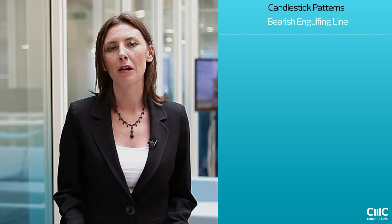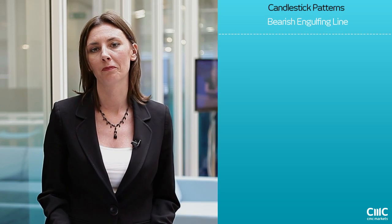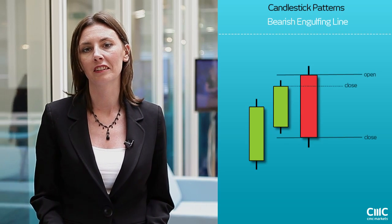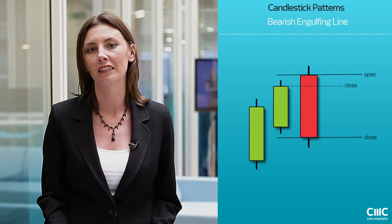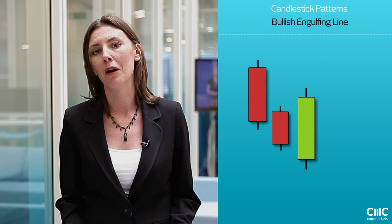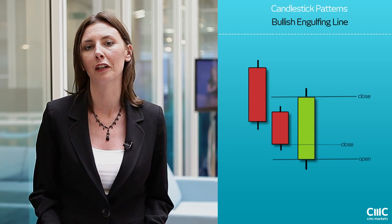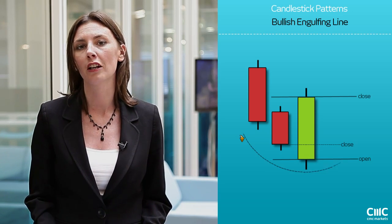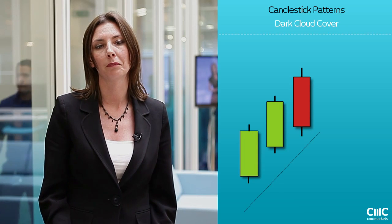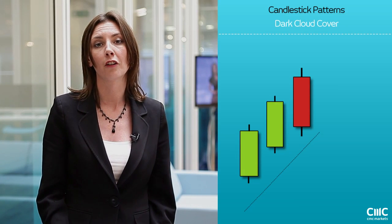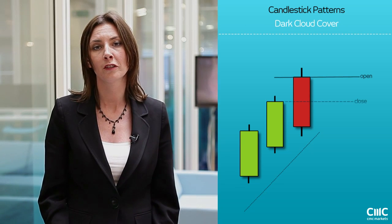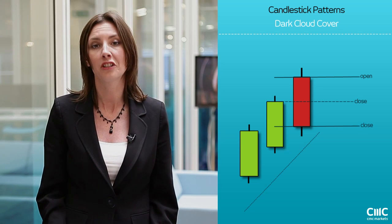The engulfing line is probably one of the easiest candlestick formations to spot. The last red candlestick completely engulfs the previous trading session, which can often indicate a key reversal point. Conversely, you have your bullish confirmation in the bullish engulfing pattern, where you'll often see this at the bottom of a downtrend, and it can often precipitate a move higher in the market. Dark cloud cover is very similar to the engulfing pattern, except it doesn't engulf the entire real body of the previous session — it opens higher than the close of the previous session and then closes well into the previous session's body.